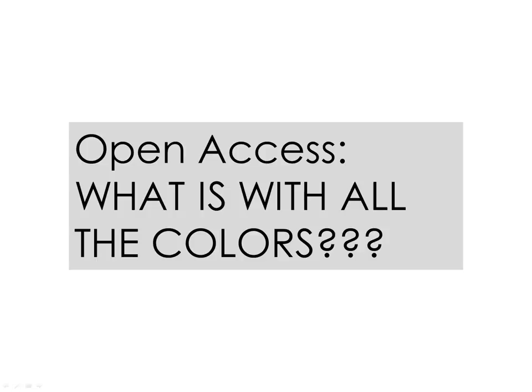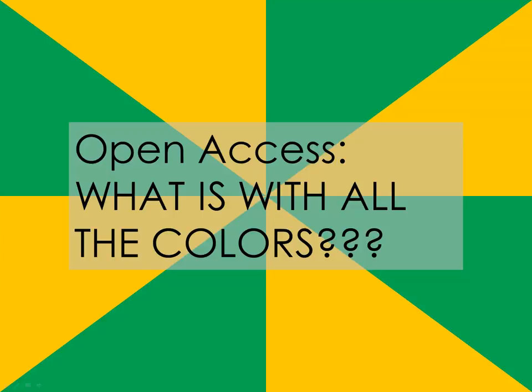Open access. What's with all the colors? If you're talking about open access, the two colors you're most likely to hear are green and gold. These are used to describe two different paths to open access, ways of achieving the end goal of open sharing.